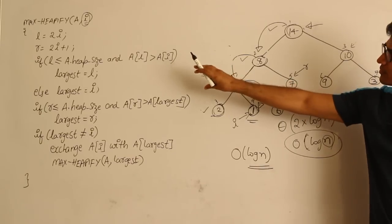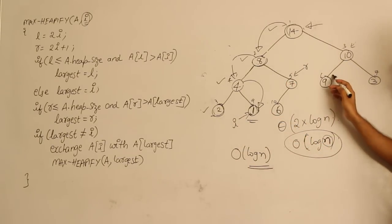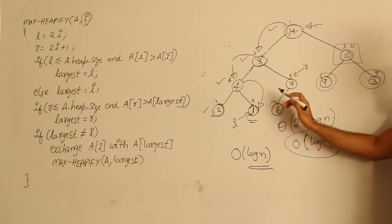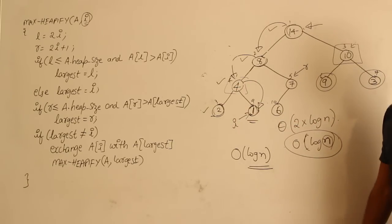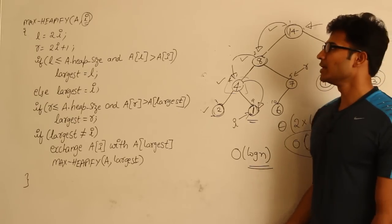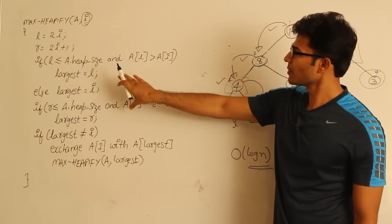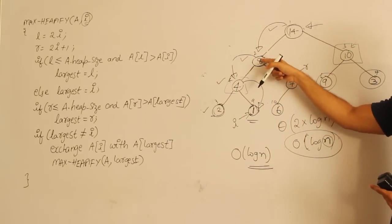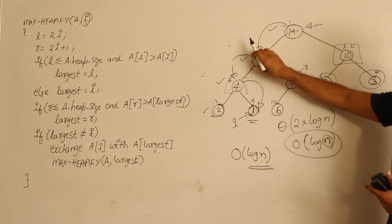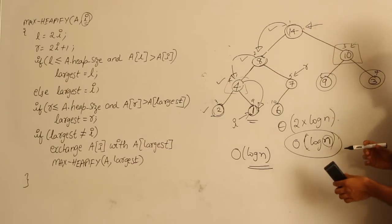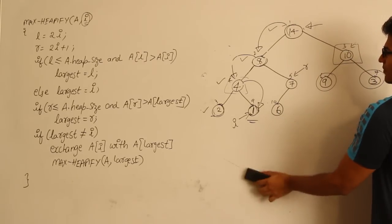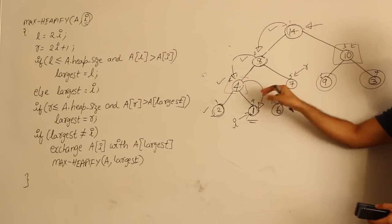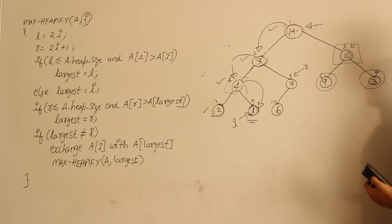Now we understand how max-heapify works and its O(log n) time complexity. Next, we will use max-heapify as a subroutine to build a heap. We know leaves are already heaps, and we apply max-heapify from the largest non-leaf index down to 1. You can also create a min-heapify variant with minor modifications — instead of finding the maximum child, find the minimum and bring it to the top.